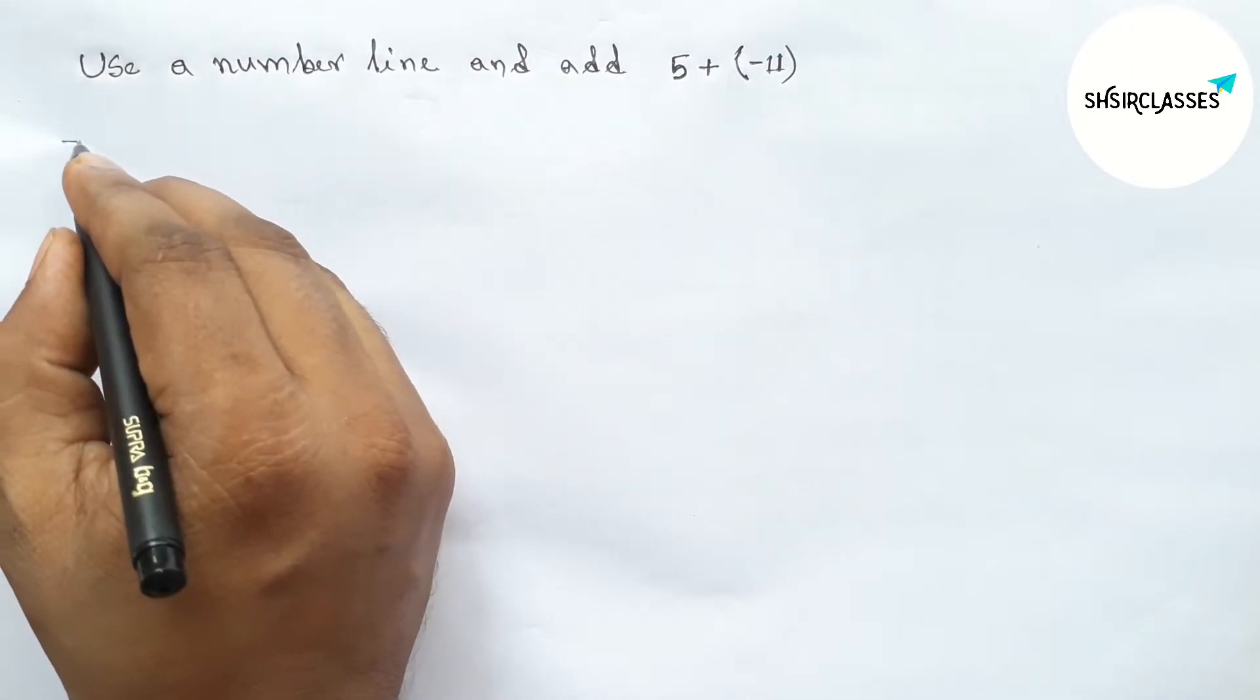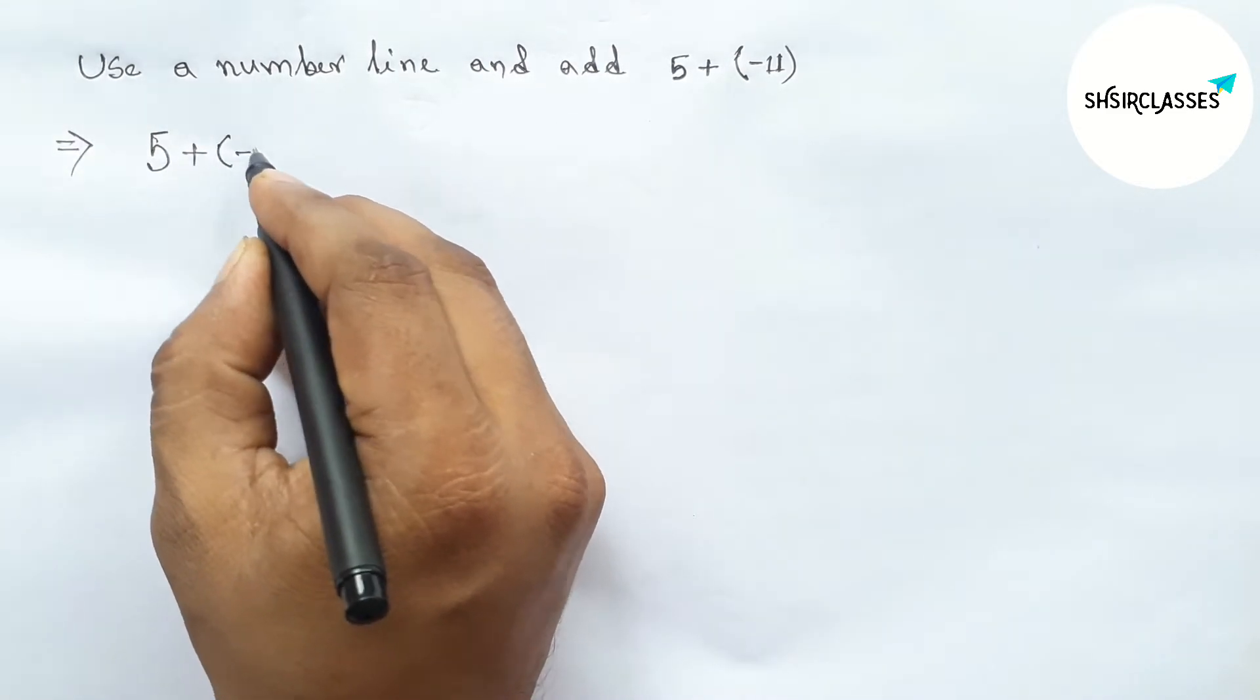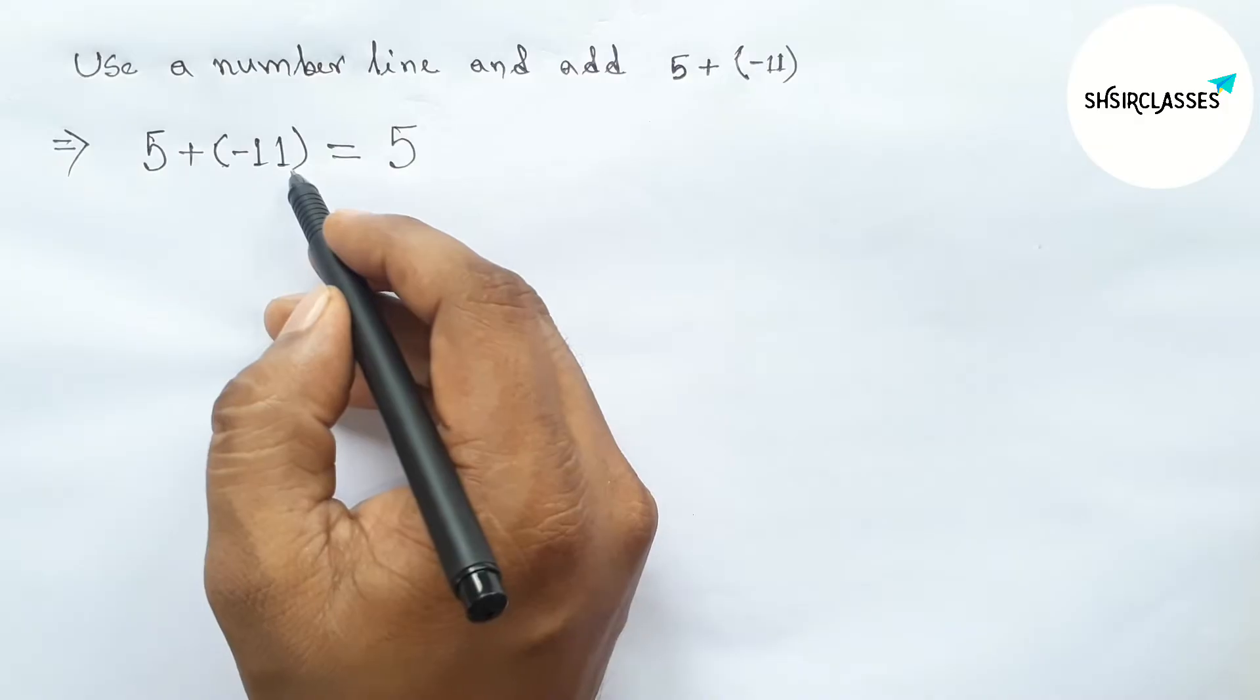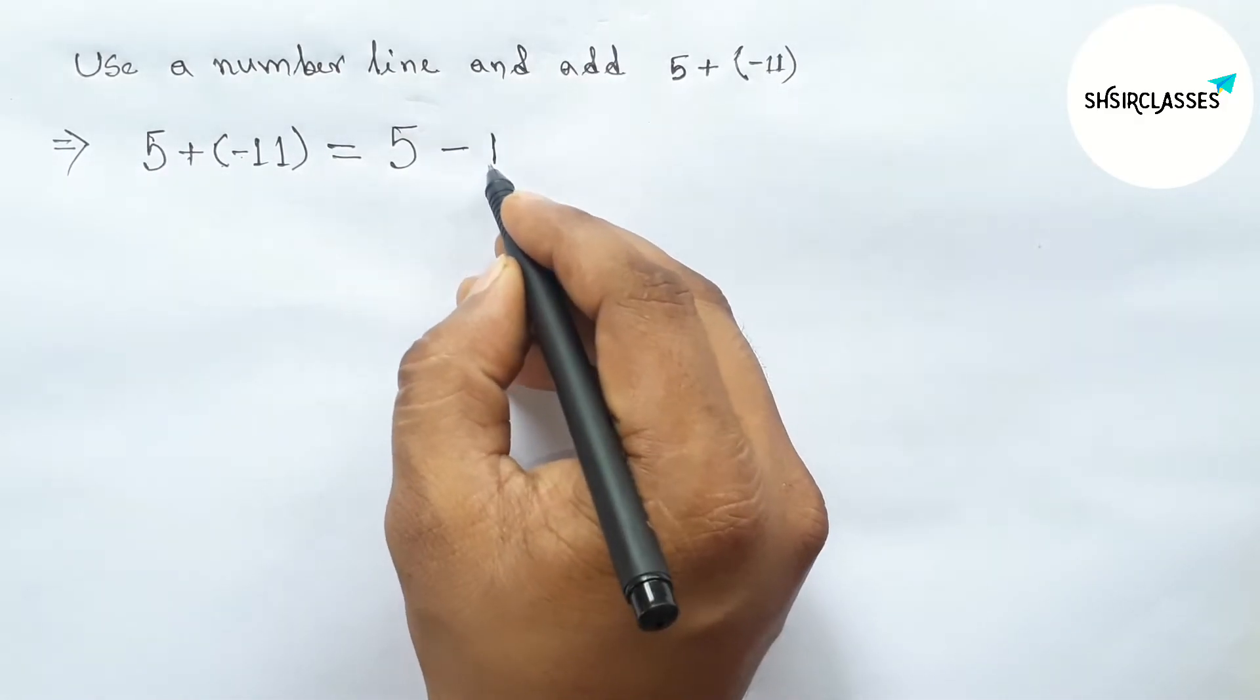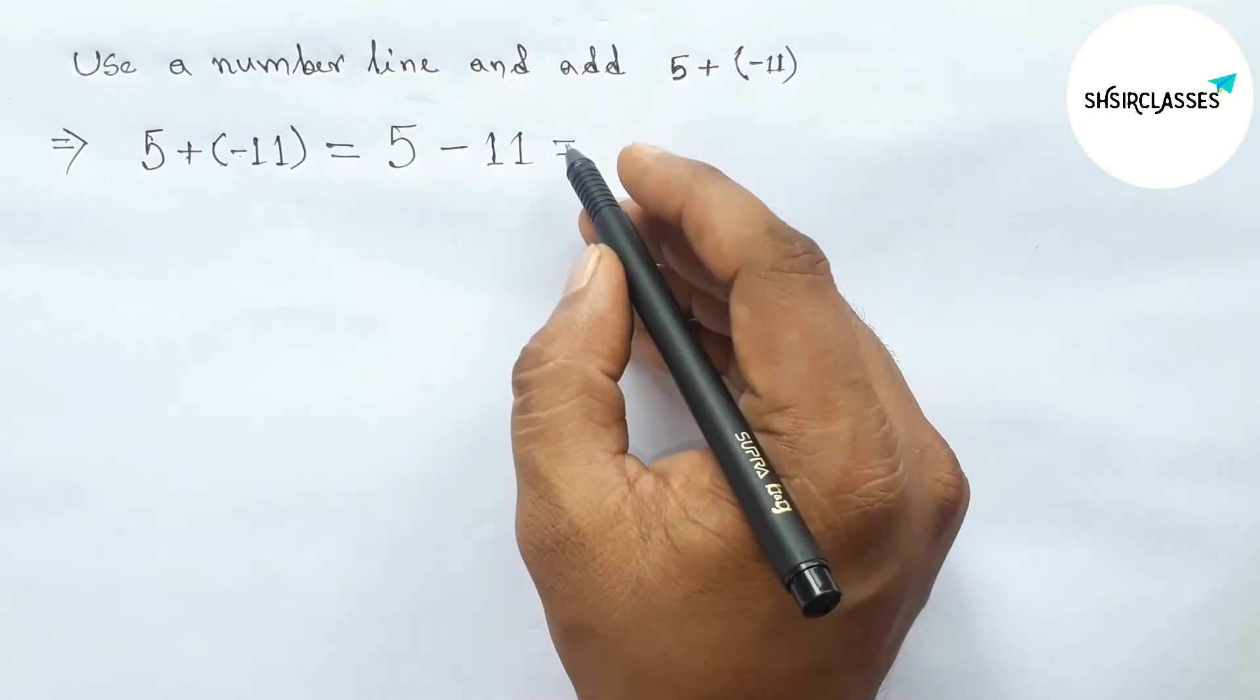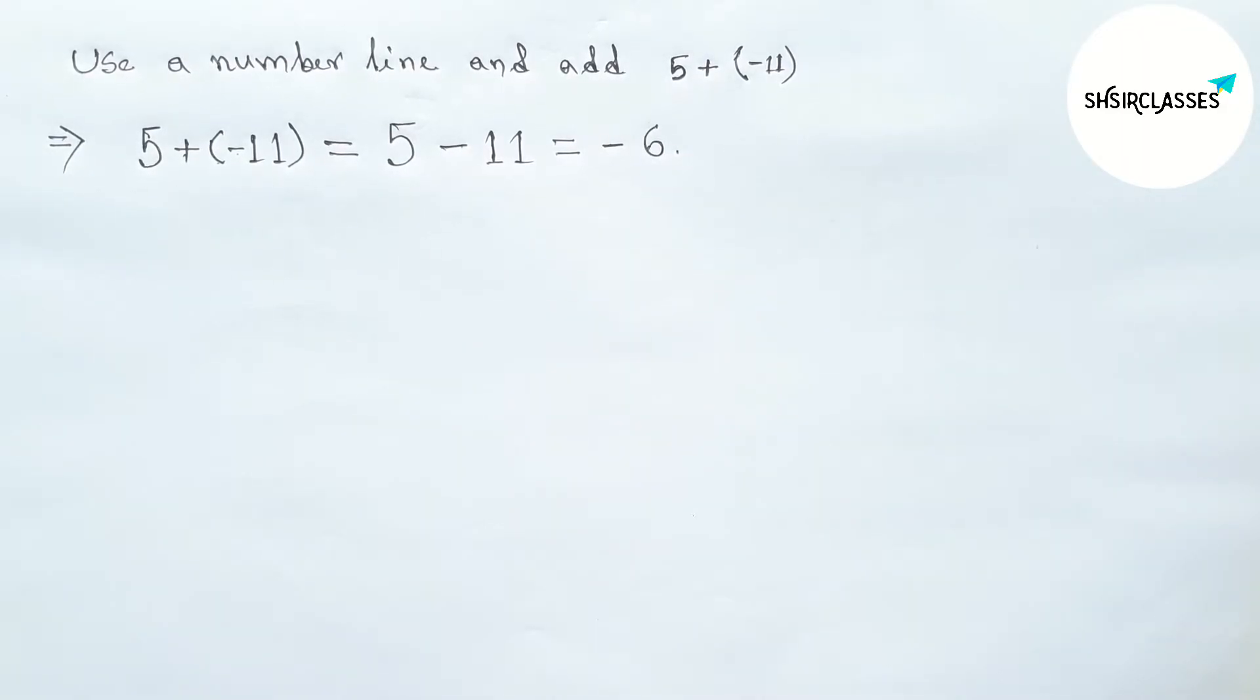First of all, let us solve this. So here 5 plus and minus 11 in first bracket equals to now 5 and here minus and plus so multiplying so obviously minus, so minus 11. Now subtracting this and the sign will be negative because the sign of 11 and this is greater, so here minus 6.